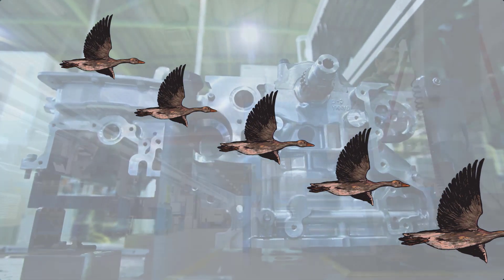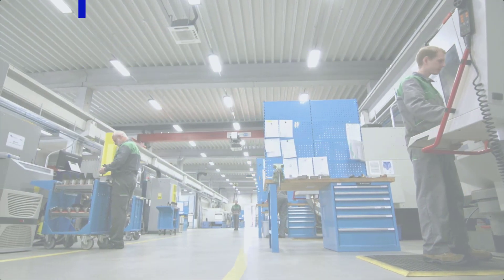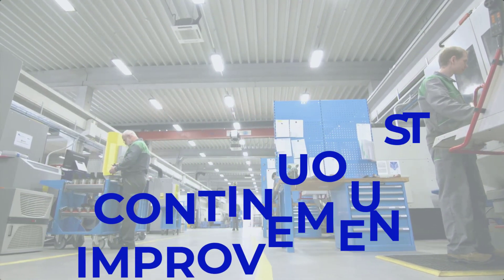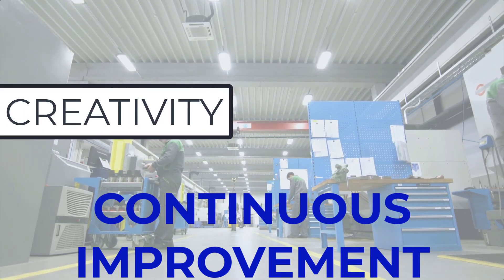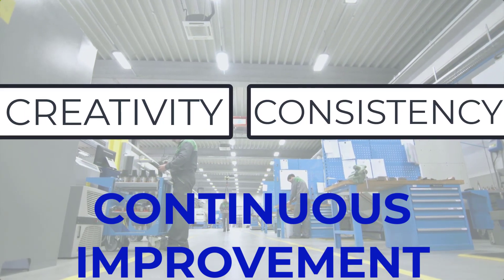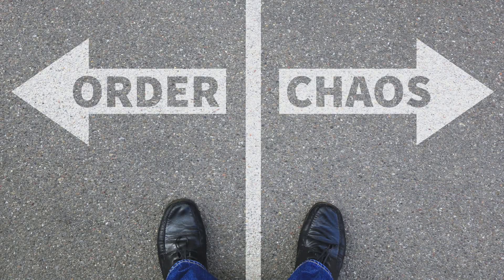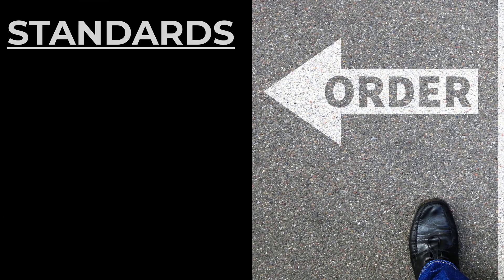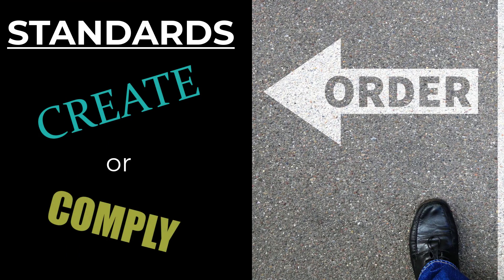This fourth step is all about plant-wide consistency. While a continuous improvement journey requires a lot of team-based creativity, it also requires some consistency too, because you don't want your plant to look like a mishmash of different visual controls and lean standards. So in the standardize step, you're going to look to create new standards or comply with the already existing standards in your plant.